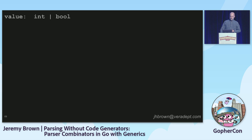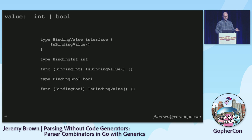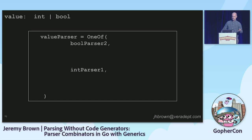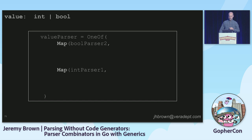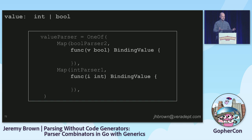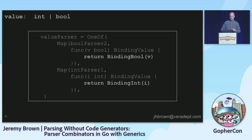We've parsed bools and ints. Let's bring them together to parse a configuration value generally. The data structure is a binding value with little marker wrappers around an int or a bool. We could use `oneOf` to bring these two things together — but that won't compile, because the bool parser produces a bool and the int parser produces an int. They won't unify for `oneOf`. So we use `map` to transform each of them with a function that takes their result type and produces a binding value. In whatever this is — 20-some lines of code — we're parsing integers and bools.